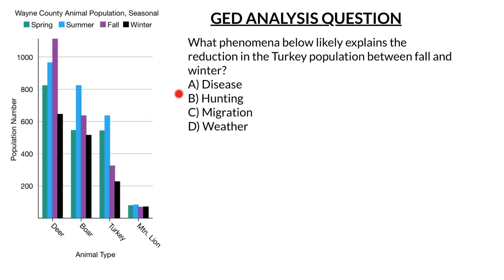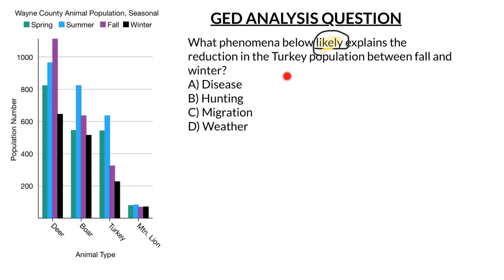Now you come over here and start looking at the question. The word 'likely' here is very important. It doesn't mean 100% for sure — it's not a factual-based question. It's based upon the information you've been given. So the question is: what phenomena below likely explains the reduction in turkey population between the fall and winter?